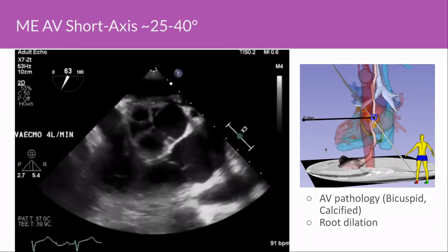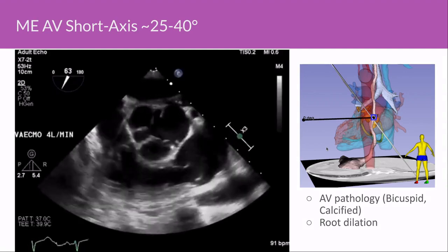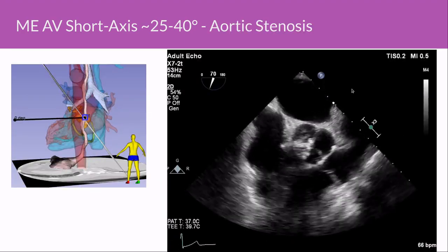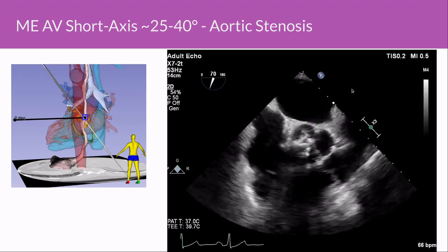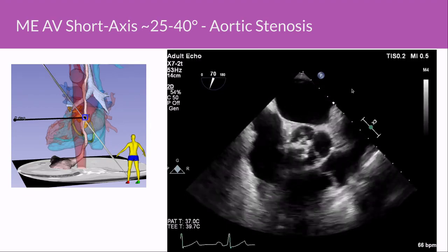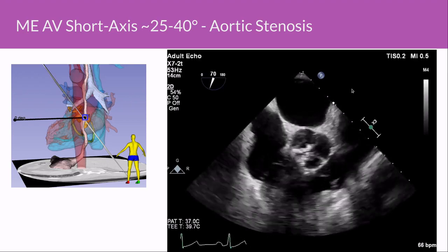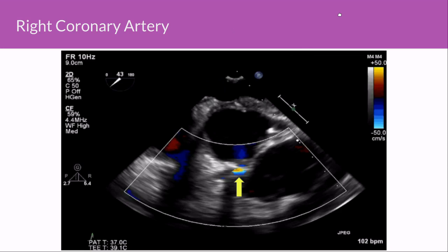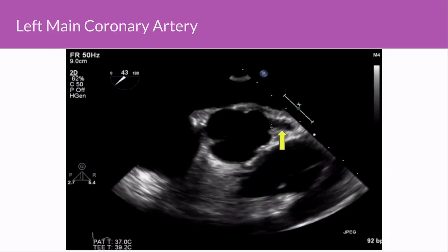Here is a normal example — the aortic valve in short axis, the pulmonary valve in something close to long axis. This is an example of a severely stenotic aortic valve, functionally bicuspid, with the commissure between the left and non-coronary cusps not opening, and very thickened leaflet edges with very limited opening. We also demonstrate imaging of the RCA, which can be quite challenging and becomes easier with color Doppler, and the left main coronary artery — where you can often see the bifurcation into the LAD and circumflex.